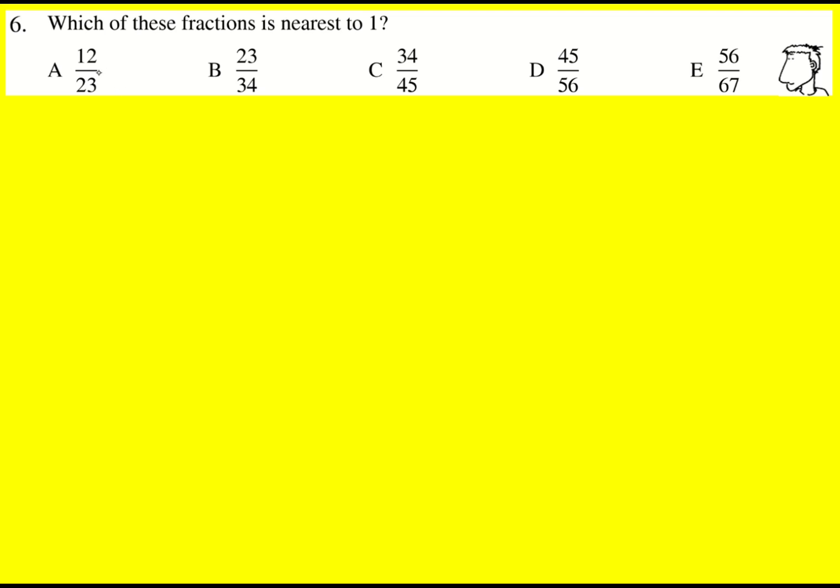So 1 can be 23 over 23 minus 12 over 23, which is going to give 11 over 23. And every single time we can basically just do the denominator minus the numerator to tell us what we're going to be left over with.